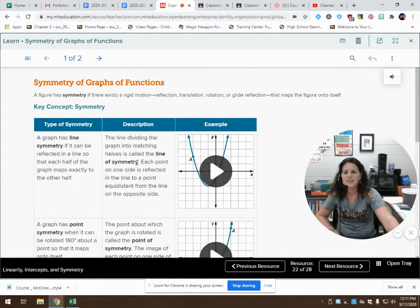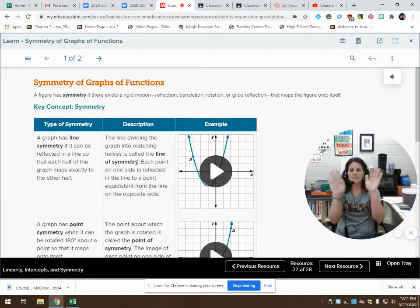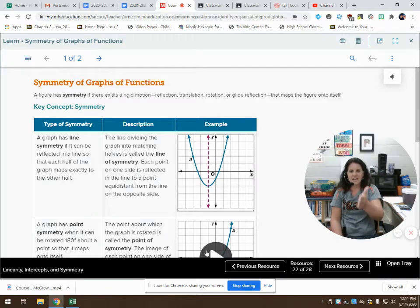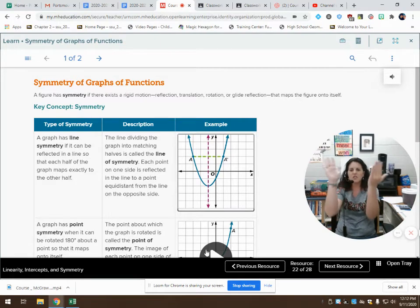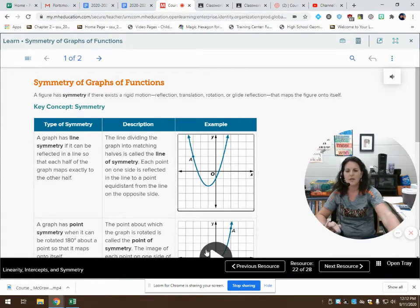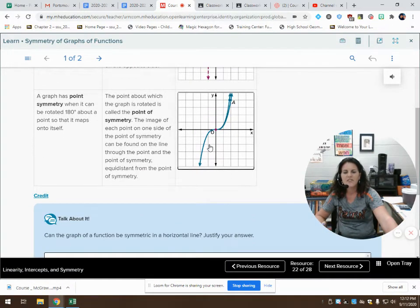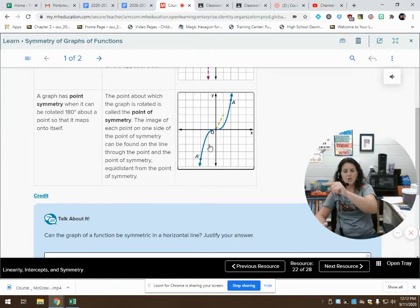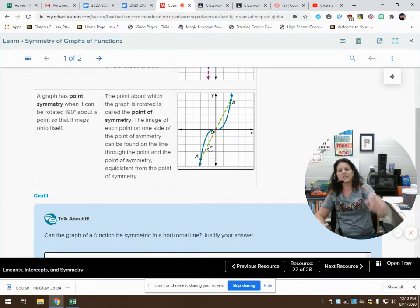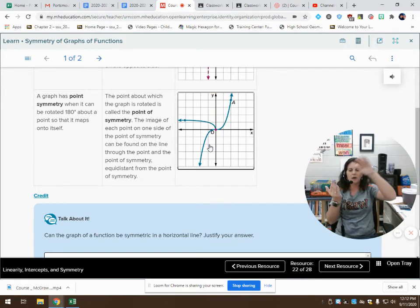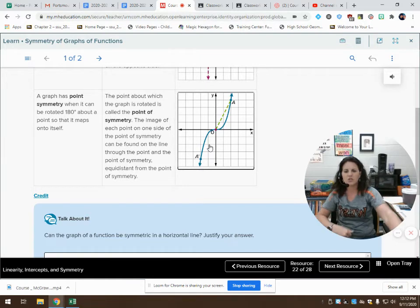A graph has line symmetry if it can be reflected so that each half of the graph maps exactly to the other half. Looking at this example here, if I was to cut it in half down that purple line and fold it over, it's going to lie exactly on top of itself. So we call that line symmetry. Some graphs have point symmetry. This graph has point symmetry because if I was to rotate the graph about that point, then it will lie on top of itself. So it has point symmetry if it can be rotated 180 degrees about a point and be mapped directly onto itself.